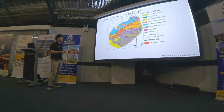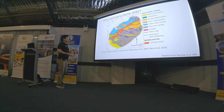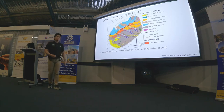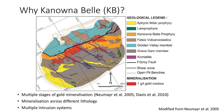The reason we use the Kanoona Bell deposit for our study is: first, it has multiple stages of gold mineralization — mineralization in the Fitzroy Fault and later shears, so at least two stages have been identified. Second, mineralization occurs across different lithologies, from porphyries to volcanoclastics and sediments. Therefore, we can test theories on different fluid sources and this deposit also intersects multiple intrusion systems.